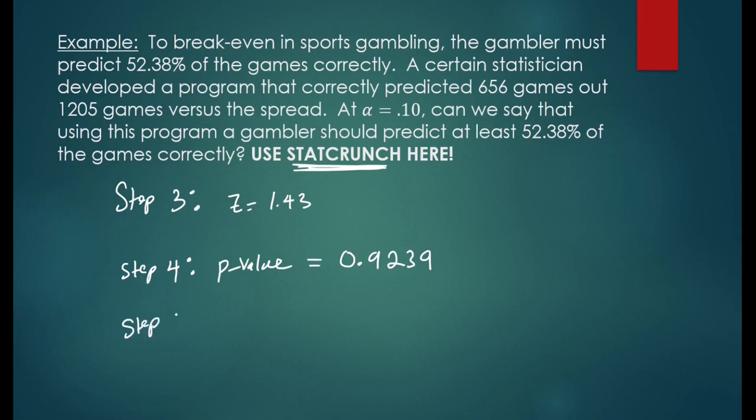In step five, we are going to state our conclusion. Ask yourself, is the p-value less than alpha? Is 0.9239 less than alpha, 0.10?